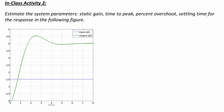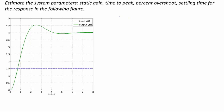Now let's estimate system parameters from a graph. We want to find the static gain, time to peak, percent overshoot, and settling time. The dashed line x(t) = 1.5 is the input, and the green line y(t) has a steady-state value of 4. So k = y(∞)/x(∞) = 4/1.5 = 2.67.